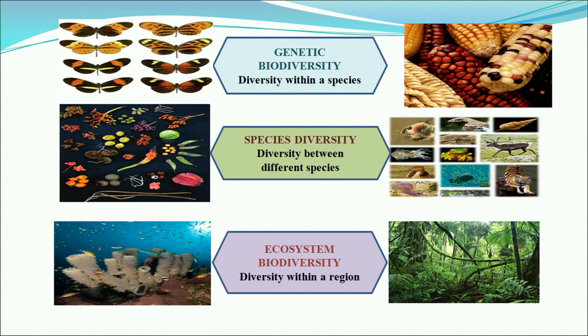This is a pictorial depiction comparing the three different levels of biological variation. First, genetic diversity is shown with different varieties of butterflies within a species, and different varieties of maize cobs. Next is species diversity — the wide diverse species we have in both plant and animal life. Last is ecosystem diversity — the ocean with corals depicted on the left, and forest land with very diverse forms of living organisms on the right.